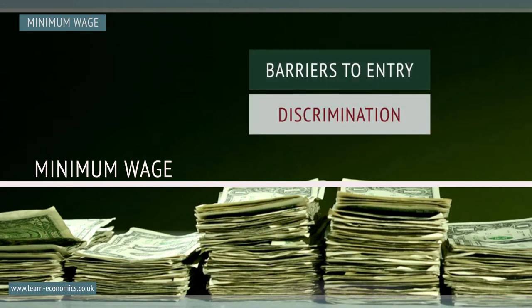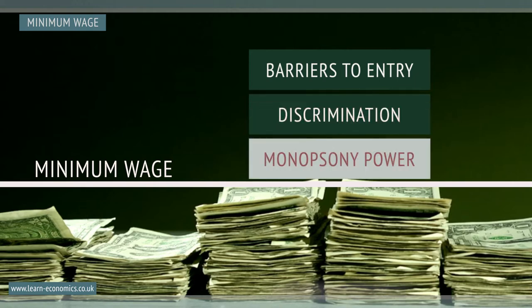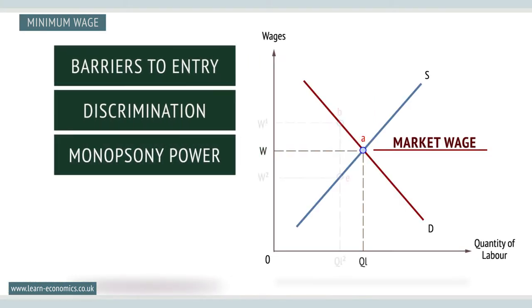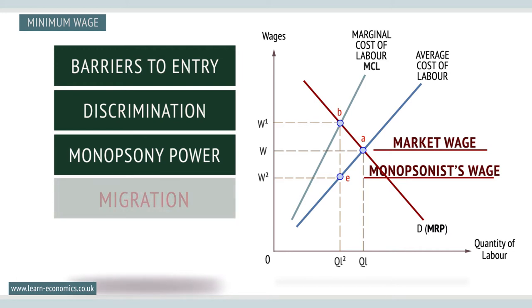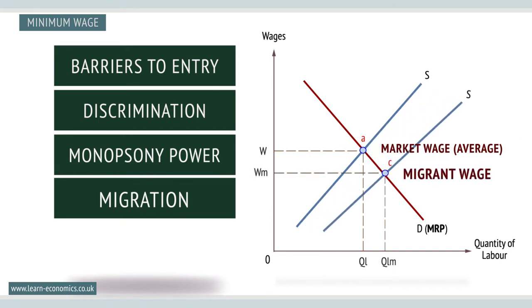Also, where markets are dominated by a single employer — a monopsonist — average wages may be below the competitive market rate, with individuals unable to bargain for wage increases. Low pay can also result from inward migration from low-pay countries, which drives down the wages for domestic employees.